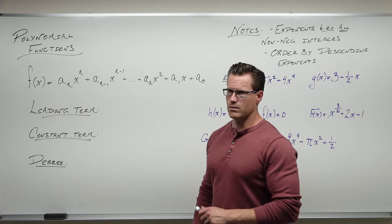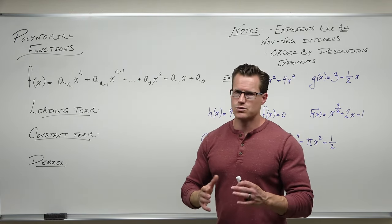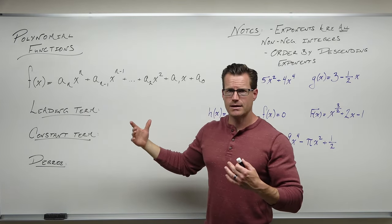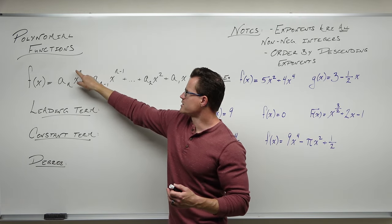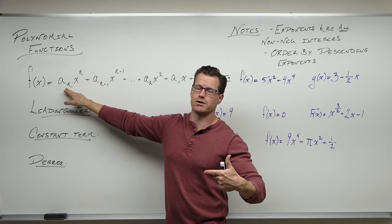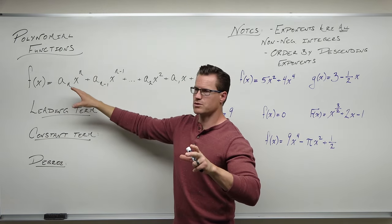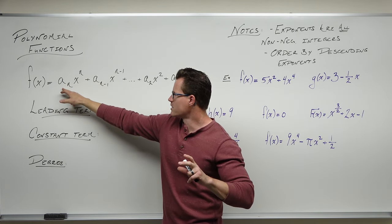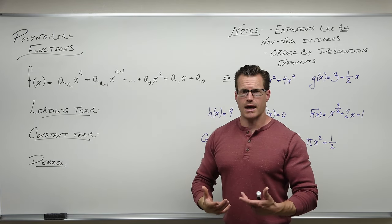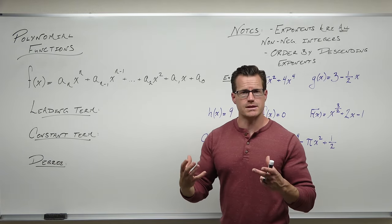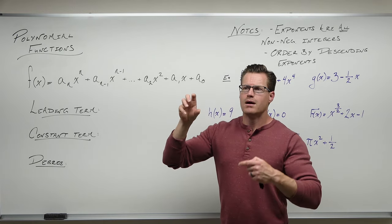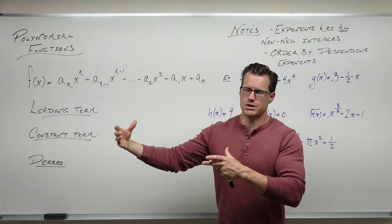Sometimes students look at that general form and think 'I'm never going to get this,' but it's really not that bad. It's just telling you that you have a lot of terms that are going to be added and subtracted, and we want them in order — biggest exponent first, descending to smallest. These coefficients are the numbers in front of our terms, matching up to specific exponents. Can some of your coefficients be zero? Yes — that would annihilate those entire terms, so you don't have to have every exponent below your largest power.